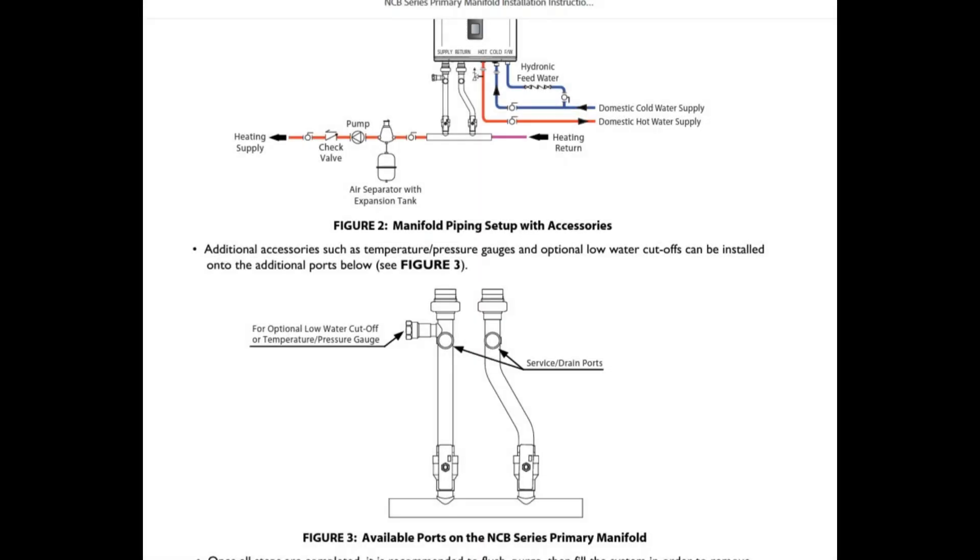So going back to the beginning with this manifold here, what we basically have is called a hydronic separator. You're going to hear it referred to a lot of times as closely spaced T's because we got T here and a T here and they're closely spaced. Pretty self-explanatory. But here we have what this basically does is it creates two separate loops that kind of come together in the same place. So you have a primary loop here where water can circulate and get reheated based on that five or six gallon per minute internal circulator pump.